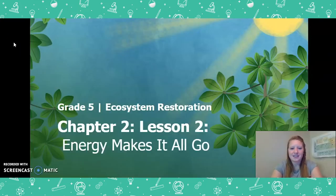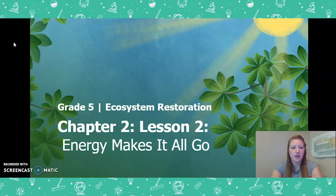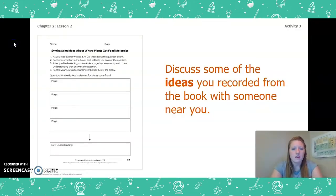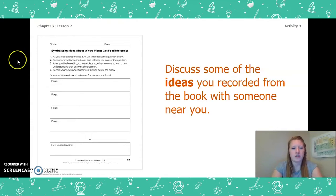Hello, fifth graders. This is Chapter 2 Lesson 2 of the Ecosystem Restoration Unit. We already did activity one. Remember we are skipping activity two, so we're going to go ahead and get started with activity three. Before we really dive in, I want you to turn back to page 37 of your Ecosystem Restoration Workbook or page 4 of your Chapter 2 Lesson 2 Activity Packet and discuss or think about some of the ideas you recorded from the book. Go ahead and pause the video to do this now.